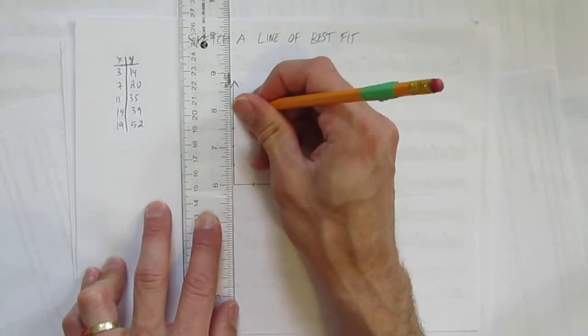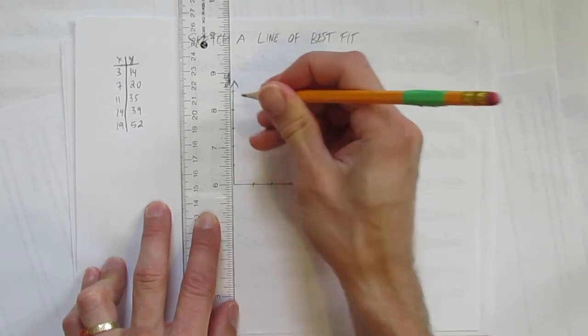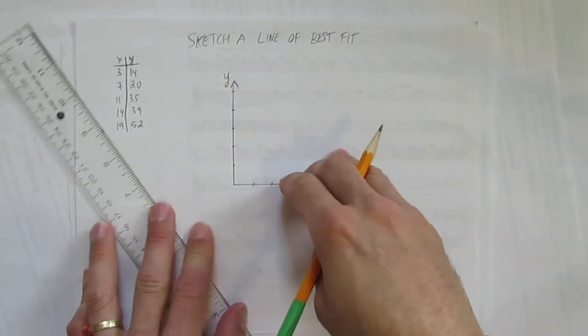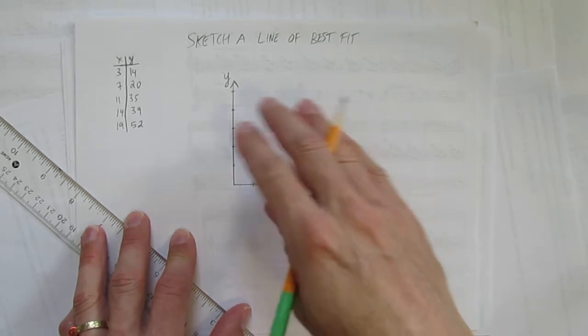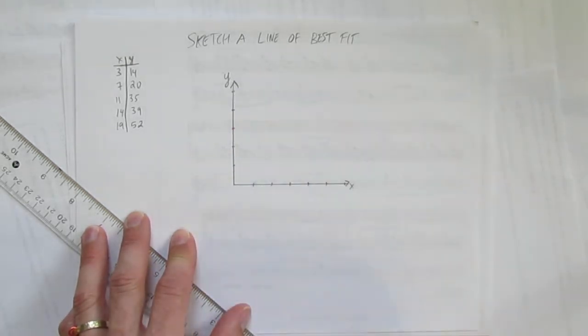The line of best fit hasn't started yet. Right now it's just make the graph. Okay, on the X axis, that's the independent and the horizontal axis here.